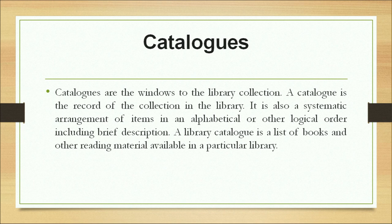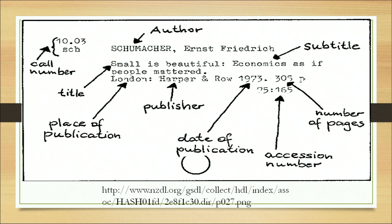A library catalog is a list of books and other reading material available in the collection. As you can see on the screen, a sample card catalog provides different bibliographical details of a particular book, including a call number — comprising class number and book number. The class number represents the contents of the document. The card also provides author, title, subtitle, place of publication, publisher, date of publication, and so on.